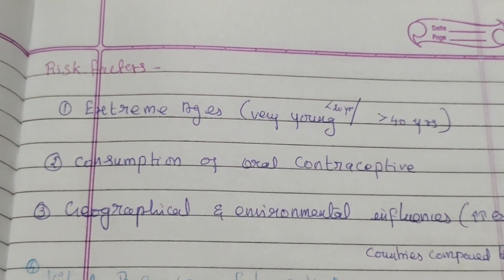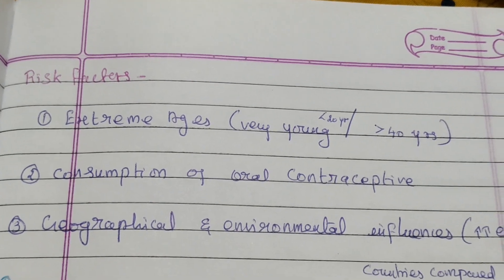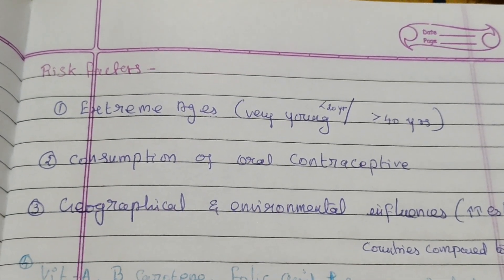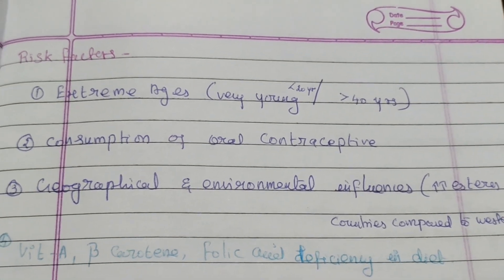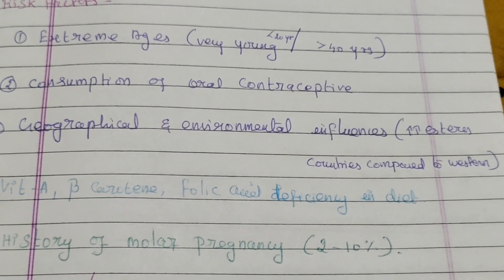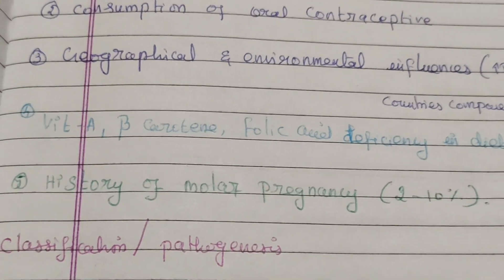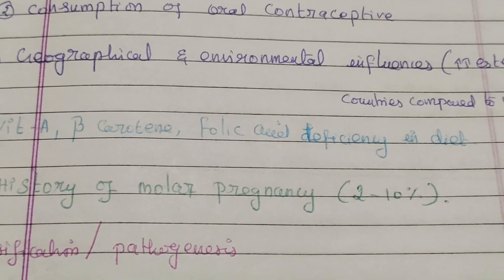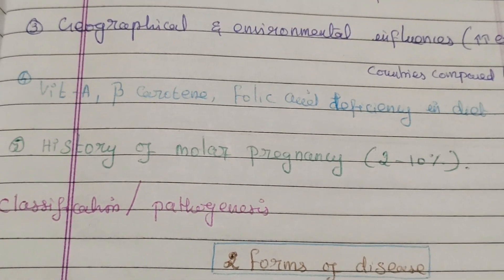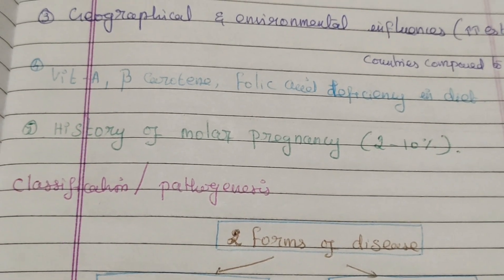Risk factors for development of hydatidiform mole include: extreme age — women less than 20 or more than 40 years old; consumption of oral contraceptives; geographical and environmental influences, as prevalence is higher in eastern countries compared to western countries; deficiency of vitamin A, beta-carotene, and folic acid in the diet. If a woman has a history of molar pregnancy, there is a 2 to 10 percent chance that a subsequent pregnancy will also be molar.